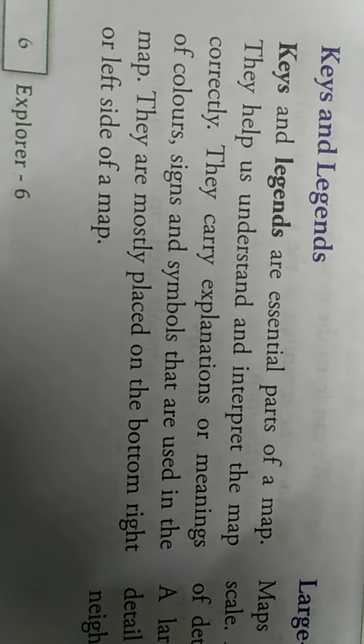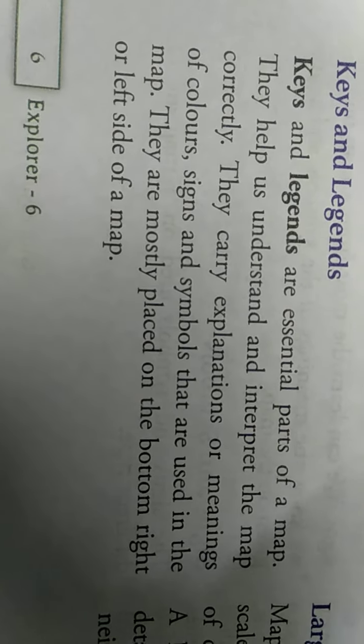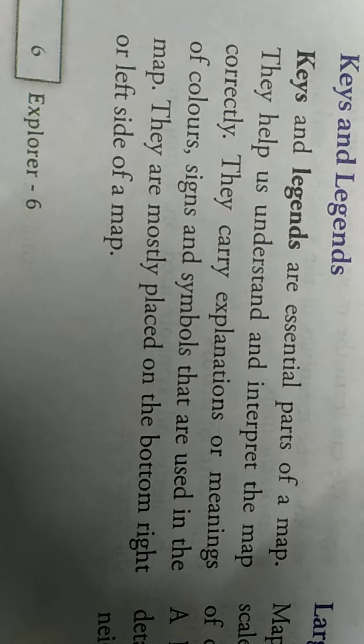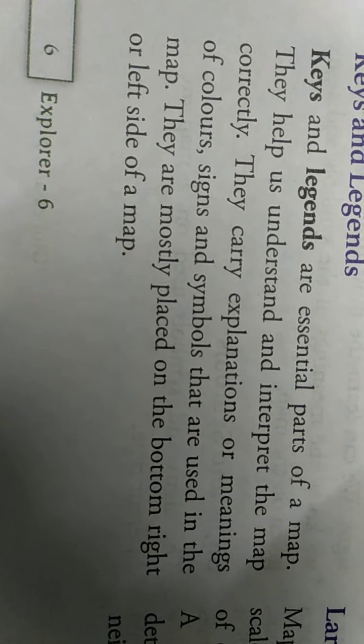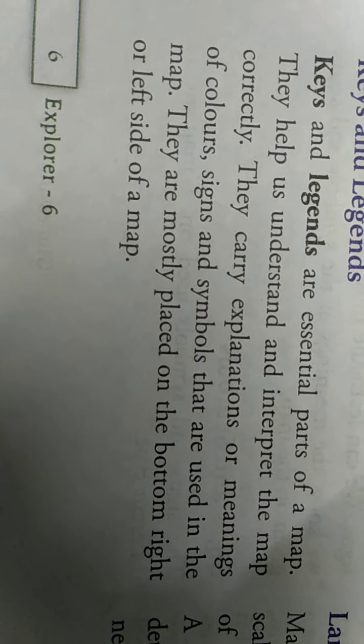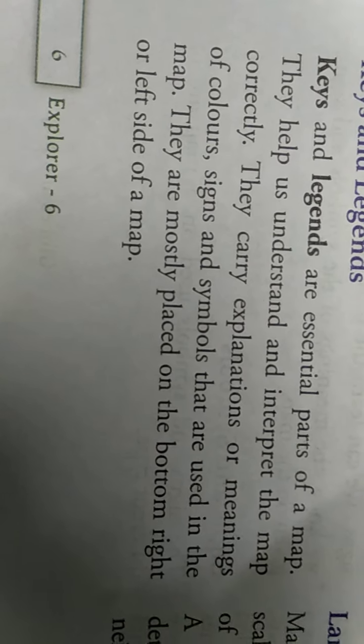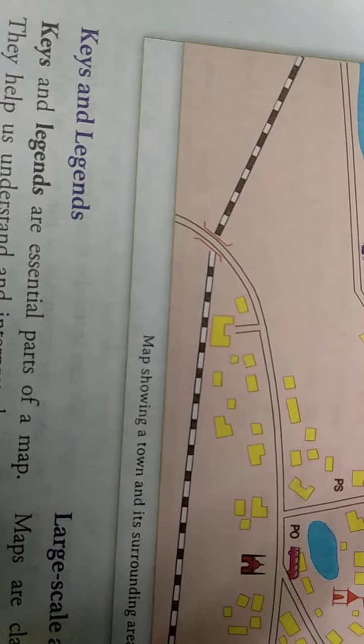Next is key and letters. These are also essential parts of a map. They help us to interpret the map correctly. They are mostly placed on the bottom, the right side, or the left side of the map. Whatever color and symbols are used, they are written on the left side of the map with what it is for.